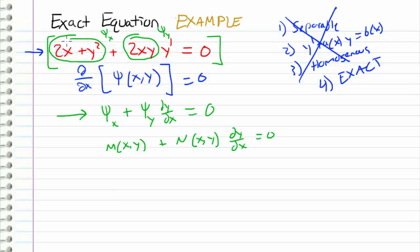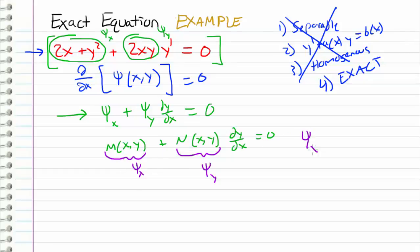Whenever we test to see whether this is an exact equation, we assume that M equals psi sub x — so 2x plus y squared equals psi sub x — and we assume that N equals psi sub y — so 2xy equals psi sub y. If M and N really do represent the partial derivatives of an unknown function psi, then from calculus we know that the mixed partials psi sub xy must equal psi sub yx for a continuous and differentiable function.